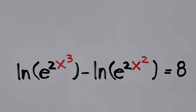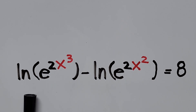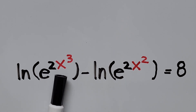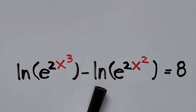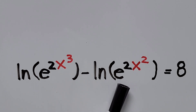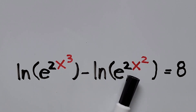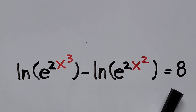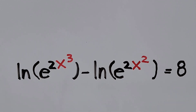Hello everyone. We have here a logarithmic exponential equation: natural logarithm of the quantity e to the power of 2x cubed, minus natural logarithm of the quantity e to the power of 2x squared, equals 8. In this video we'll be solving for the real values of x.